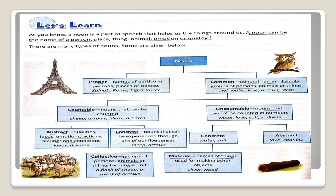Material noun. Names of things used for making other objects. Silver, Wood.